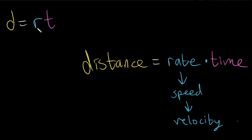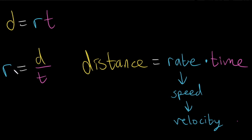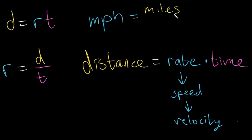Let's solve for r. If we divide by t on both sides, then we get r is equal to d over t. So our rate unit would be equal to our distance unit divided by our time unit. For example, if our rate is miles per hour, it's going to be equal to miles divided by hours.